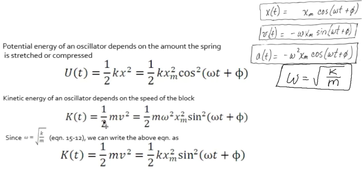And then the kinetic energy we know is one half mv squared. Again using our equation from simple harmonic motion for velocity, we plug it in for v and square it and we get one half m omega squared x max squared sine squared.